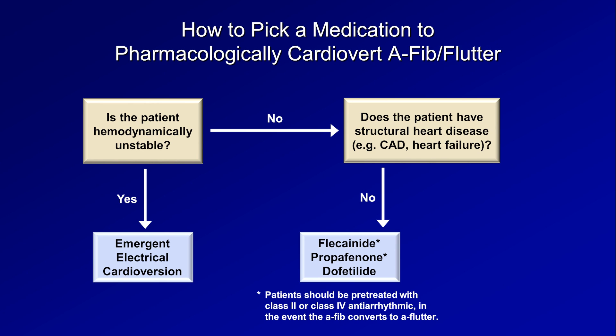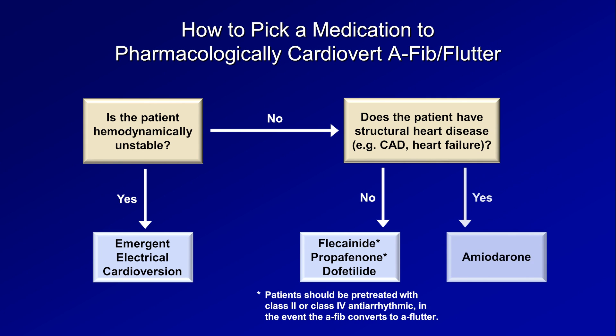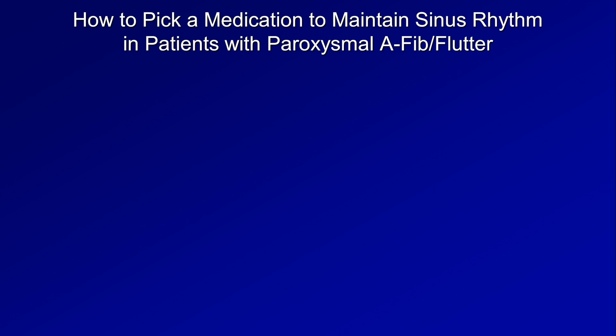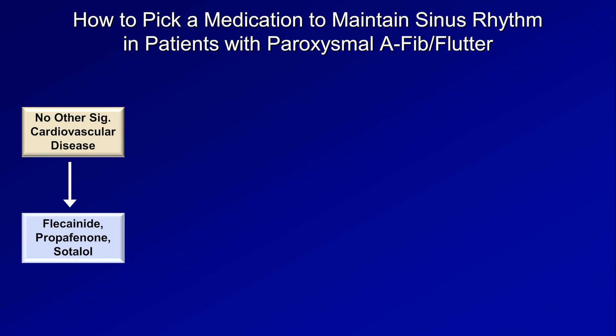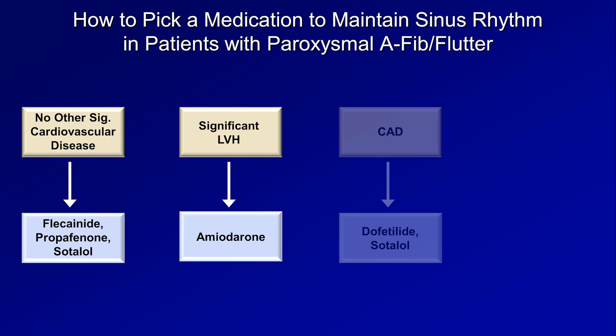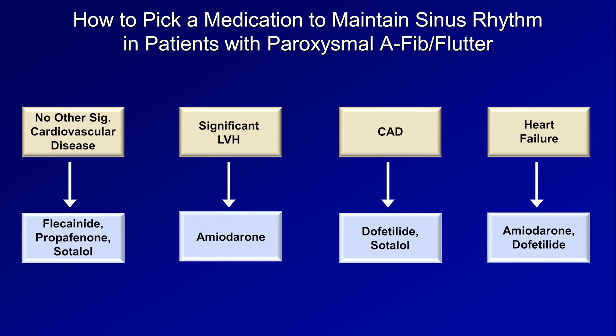If the patient does have structural heart disease, amiodarone is the most common and probably best option. Once a patient has cardioverted back to sinus, either electrically, pharmacologically, or spontaneously, what is the best medication to maintain sinus rhythm? If there is no other significant cardiac disease, then flecainide, propafenone, and sotalol are all okay choices. If significant LVH is present, for example from poorly controlled hypertension, then amiodarone is generally used. If they have CAD, then it's dofetilide or sotalol. And if it's heart failure, it's amiodarone or dofetilide.